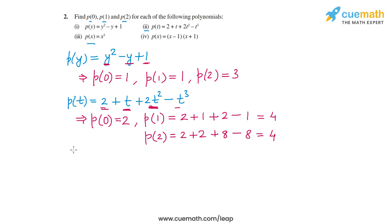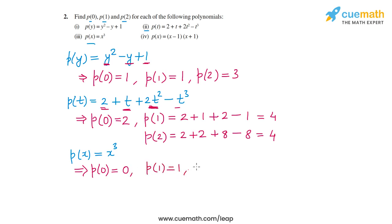Now let's go to the third part: p(x) equals x cubed. So p(0) equals 0 cubed, which is 0. p(1) equals 1 cubed, which is 1. And p(2) equals 2 cubed, which is 8.